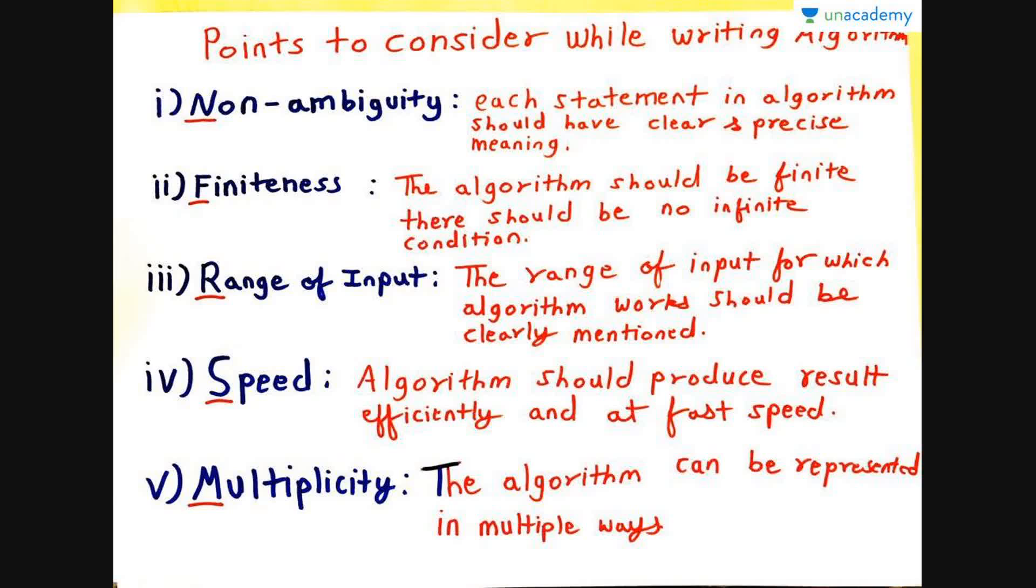The second point is finiteness. The algorithm should be finite, means there should not be infinite conditions. Like suppose if I say x is greater than 100. Now it can be greater than 100, so means there is no end condition to it. It can be 1 lakh, 2 lakh or even infinity, right? That goes into an infinite loop which we'll learn later. But as you know that's an infinite condition.